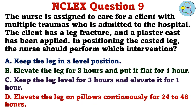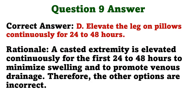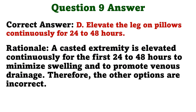The nurse is assigned to care for a client with multiple traumas who is admitted to the hospital. The client has a leg fracture and a plaster cast has been applied. In positioning the casted leg, the nurse should perform which intervention? A. Keep the leg in a level position. B. Elevate the leg for 3 hours and put it flat for 1 hour. C. Keep the leg level for 3 hours and elevate it for 1 hour. D. Elevate the leg on pillows continuously for 24 to 48 hours. The correct answer is D. A casted extremity is elevated continuously for the first 24 to 48 hours to minimize swelling and to promote venous drainage. Therefore, the other options are incorrect.